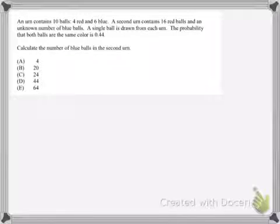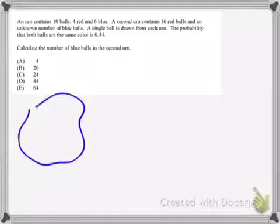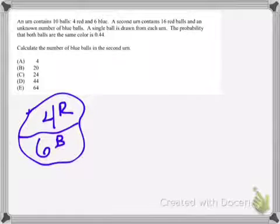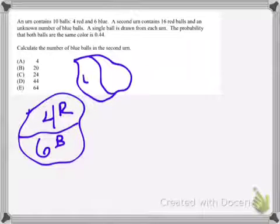Question one says that we have got two urns. The first urn, they tell us, has got ten balls. Those ten balls, four of them are red, and six of them are blue. But then we've got this second urn, and that second urn contains 16 red balls and an unknown quantity of blue ones. The question here is how many blue balls are in that second urn, given that the probability of getting two balls of the same color, one from each urn, is 0.44. So we've got an unknown piece of information here. We're going to go ahead and say that that variable will be B.